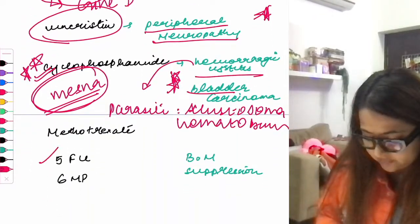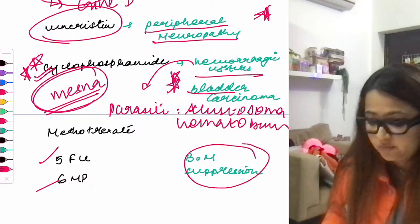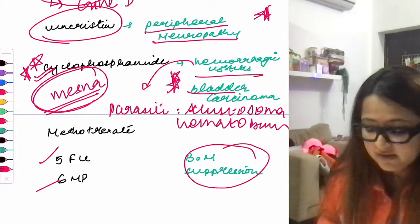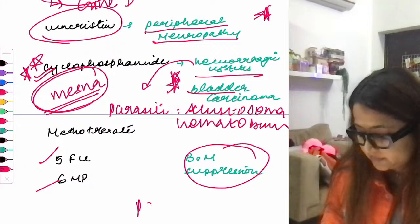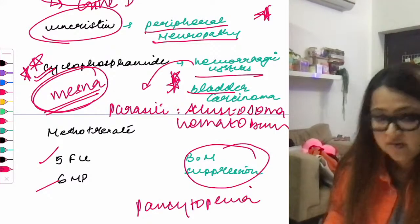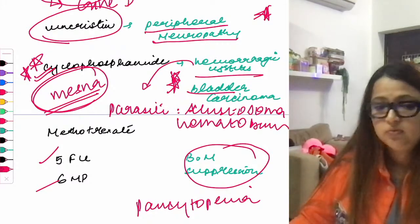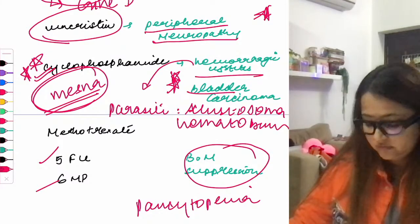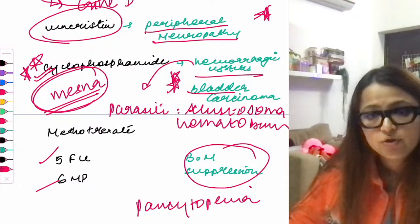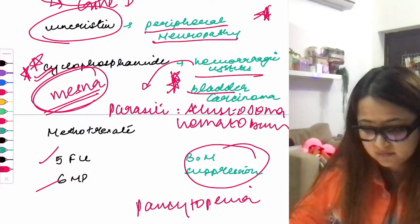Methotrexate, 5-fluorouracil, and 6-mercaptopurine share the common side effect of bone marrow suppression, leading to pancytopenia — anemia, thrombocytopenia, and leukopenia. These are the most important side effects of chemotherapeutic drugs to know for the exam.